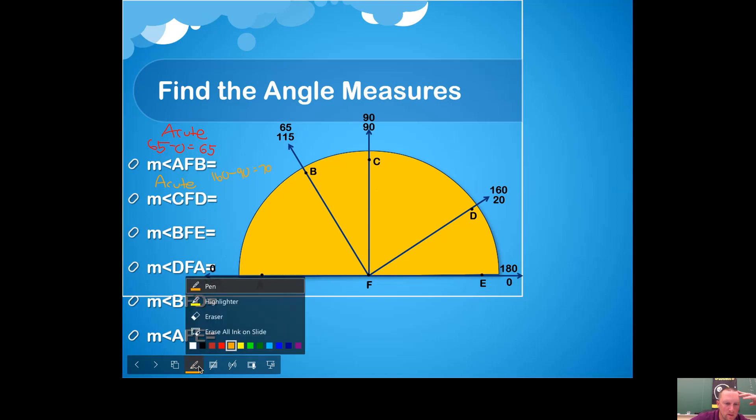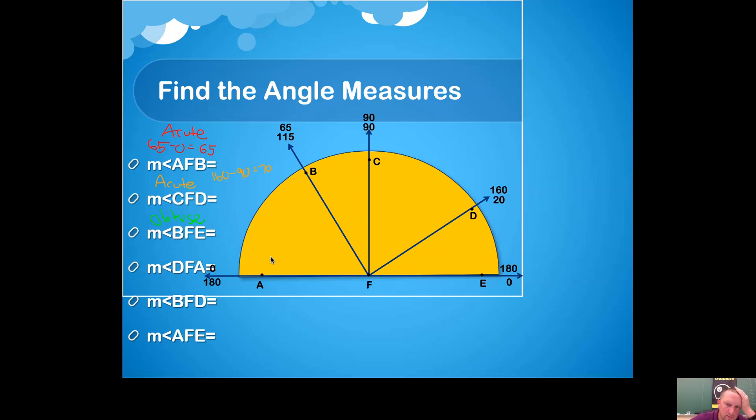Next one: find the measure of angle BFE. B, F, E—it's this big fat angle. It's obtuse. So make sure when you solve for this answer that you get something bigger than 90. We can use either pair of numbers—remember, either scale. If you look at both top numbers, we have a 180.